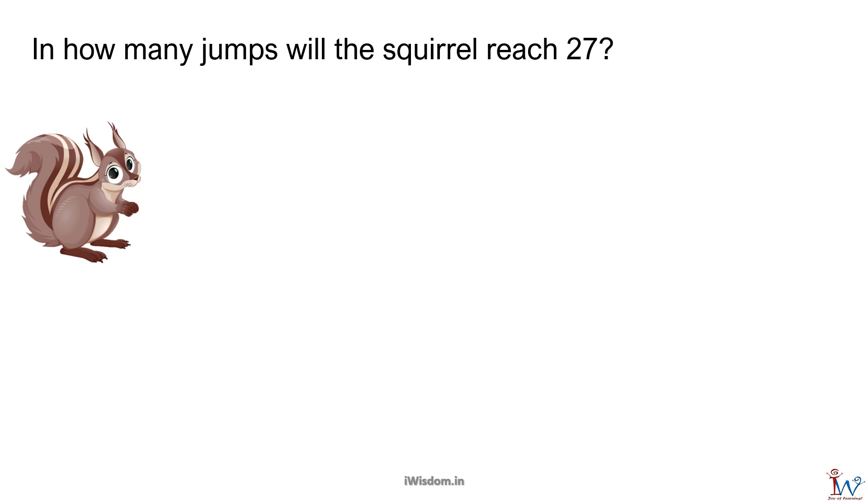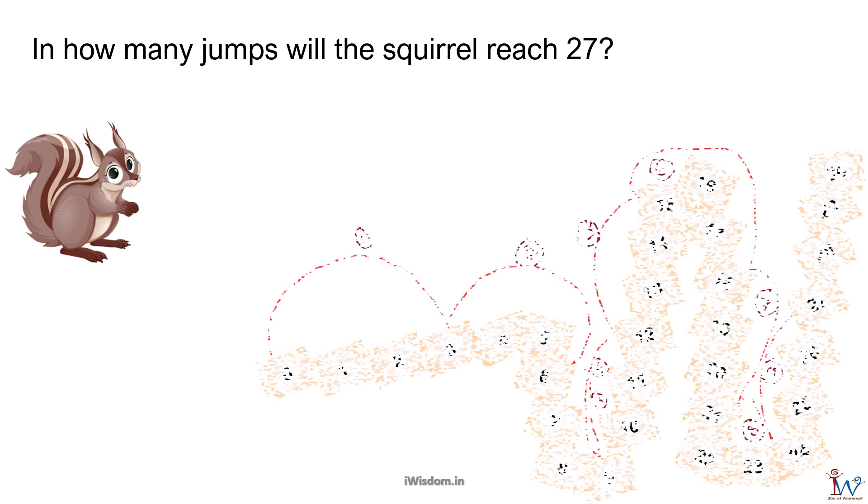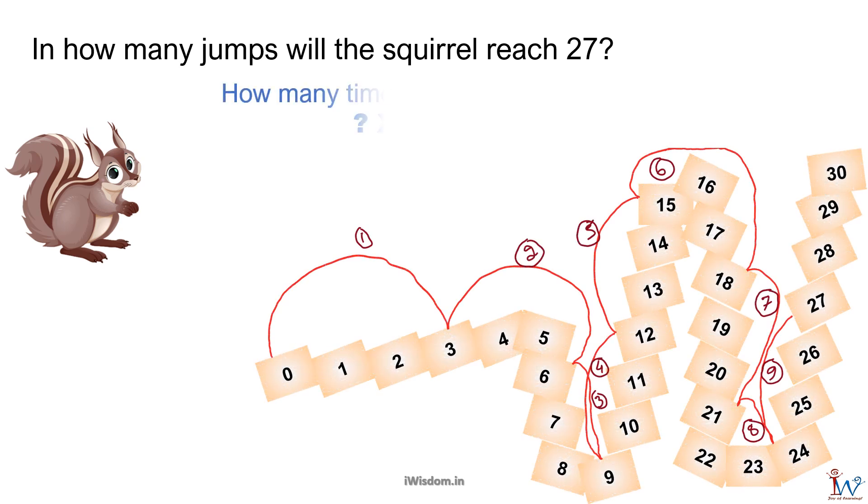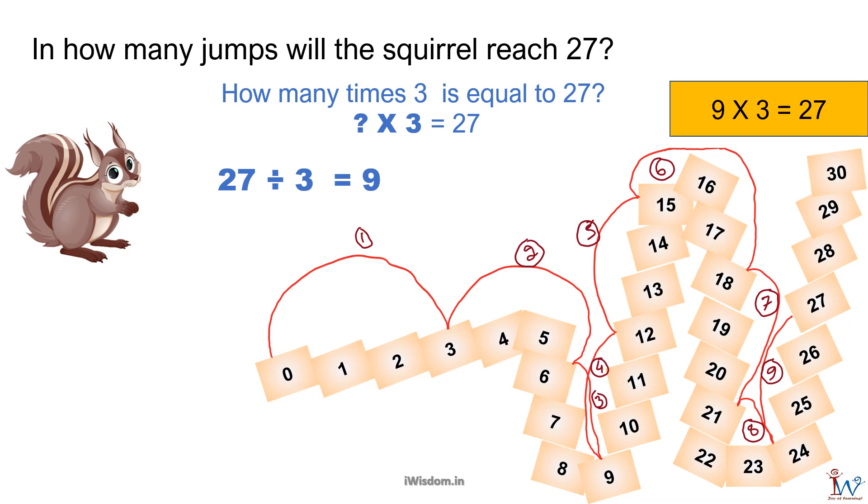In how many jumps will the squirrel reach 27? Squirrel covers 3 steps in one jump. So we ask, how many times 3 is 27? We recollect 9 times 3 is 27 from multiplication table. So 27 divided by 3 is 9. Squirrel needs 9 jumps. Well done!